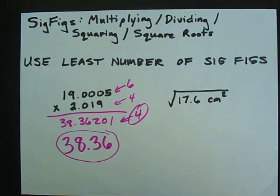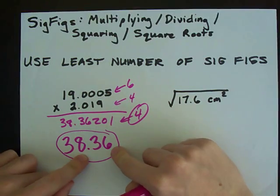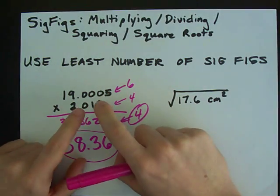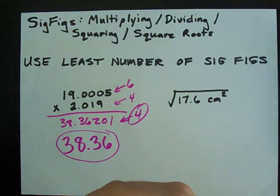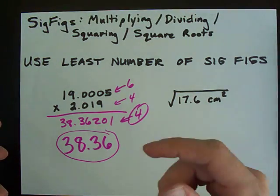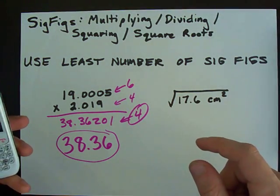According to significant digits, because it has four significant digits and one of the numbers you multiplied only had four. It's the same when you're doing square roots. If you go to your calculator and you take the square root